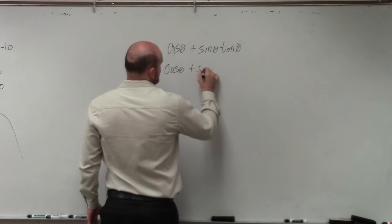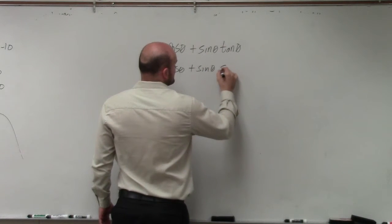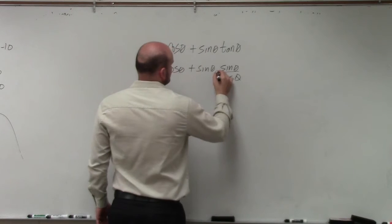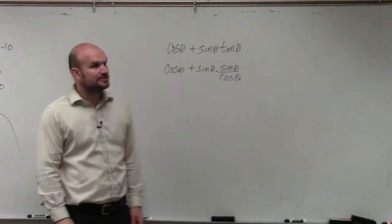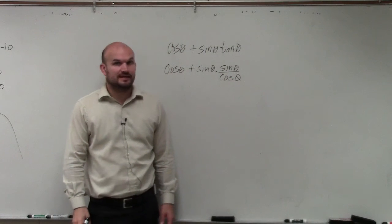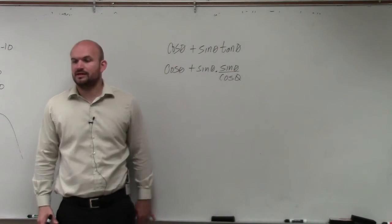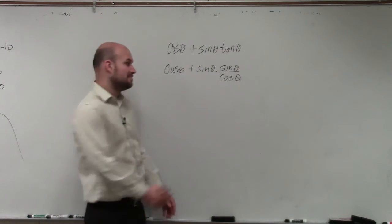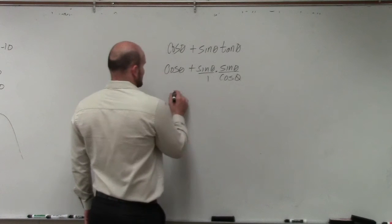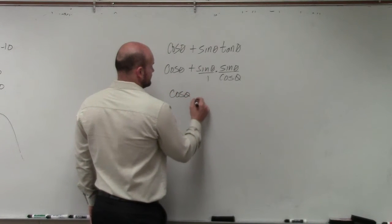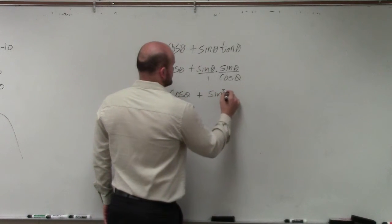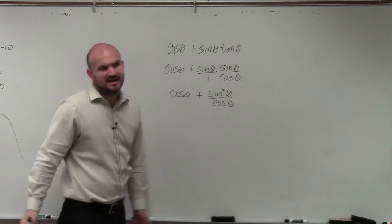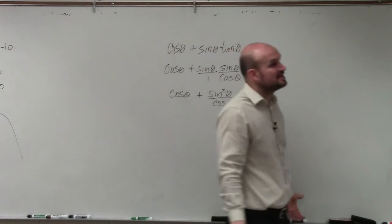So if I do that, I get cosine of theta plus sine of theta times sine of theta over cosine of theta, because tangent, using my quotient identity — tangent is the same thing as sine over cosine. Now if I multiply those, I get cosine of theta plus sine squared of theta over cosine of theta, because x times x is x squared, so sine times sine is going to be sine squared.